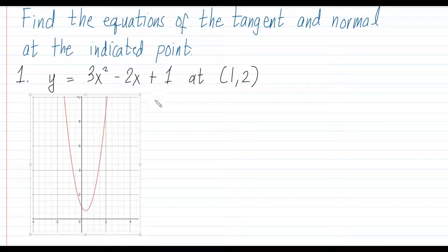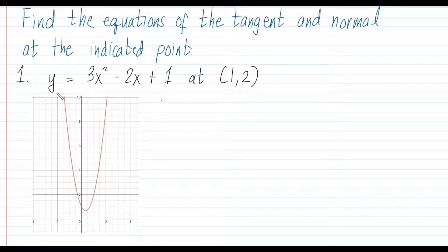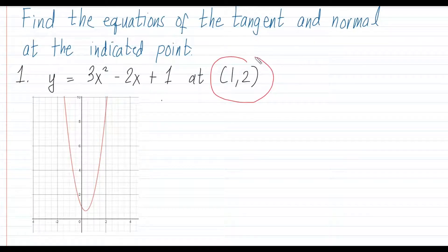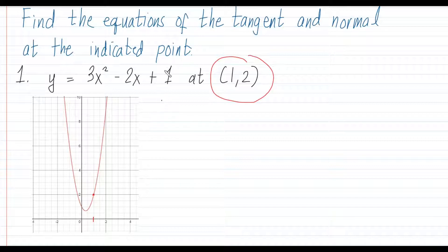We have here a function. I used a grapher to see it, and as I graphed the function in an online grapher, it appears to be a parabola. We have to find the tangent and normal at the point (1, 2). Using your knowledge in analytic geometry, x is 1 and y is 2, so that is the point we want to examine.